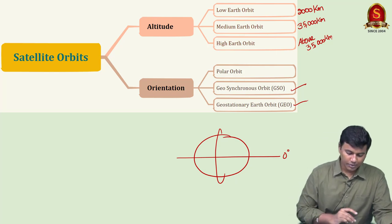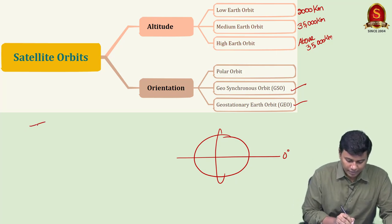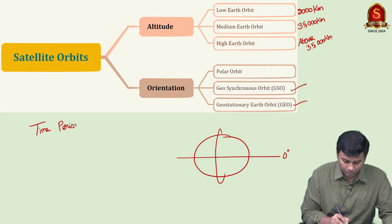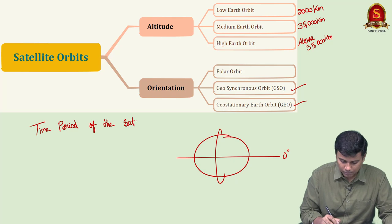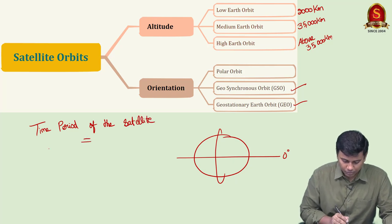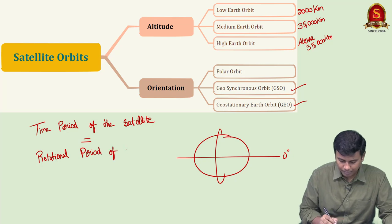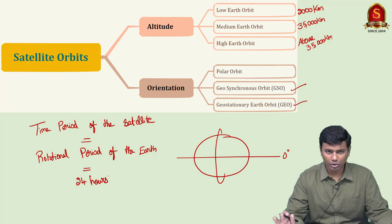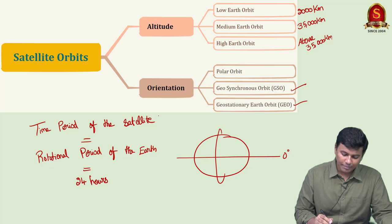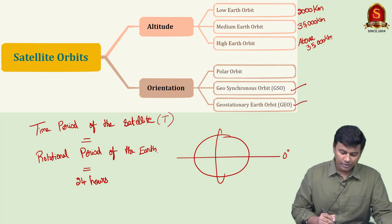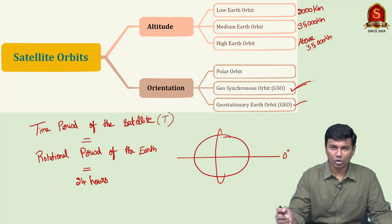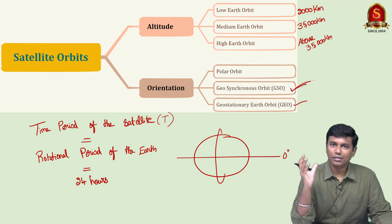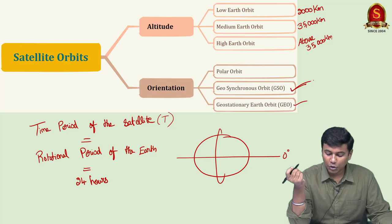If the time period of the satellite equals the rotational period of the earth — approximately 24 hours (or more precisely 23 hours 56 minutes 4 seconds) — then it is called a geosynchronous orbit. The earth is rotating and the satellite is also rotating in a synchronized manner, so it is called geosynchronous.